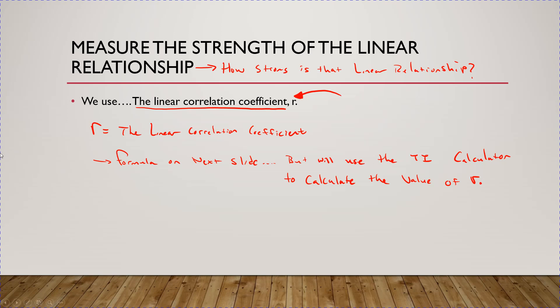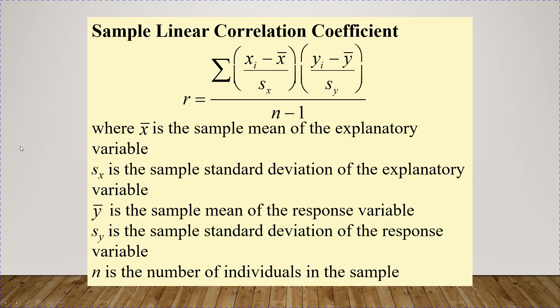Let's take a look at this formula, and you'll see why we want to use the calculator. The linear correlation coefficient r is given by the sum of each x value minus x-bar divided by s sub x, times each y value minus y-bar divided by s sub y, summed for each data point, then divided by n minus 1. This formula looks terrible and is really, really hard to do by hand.